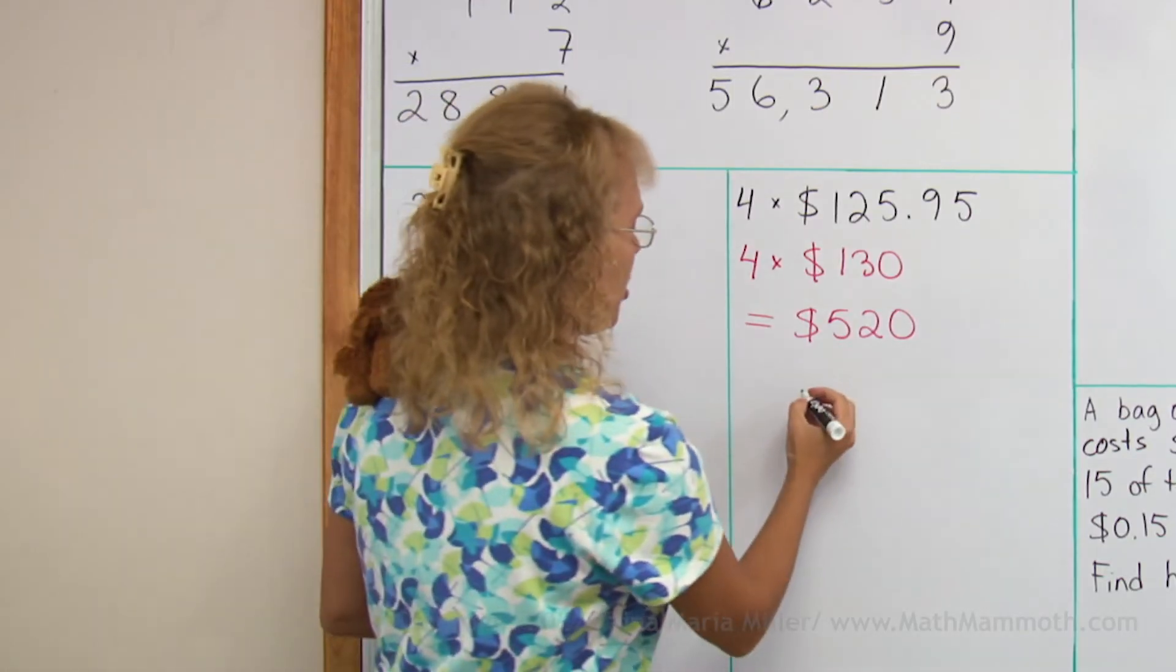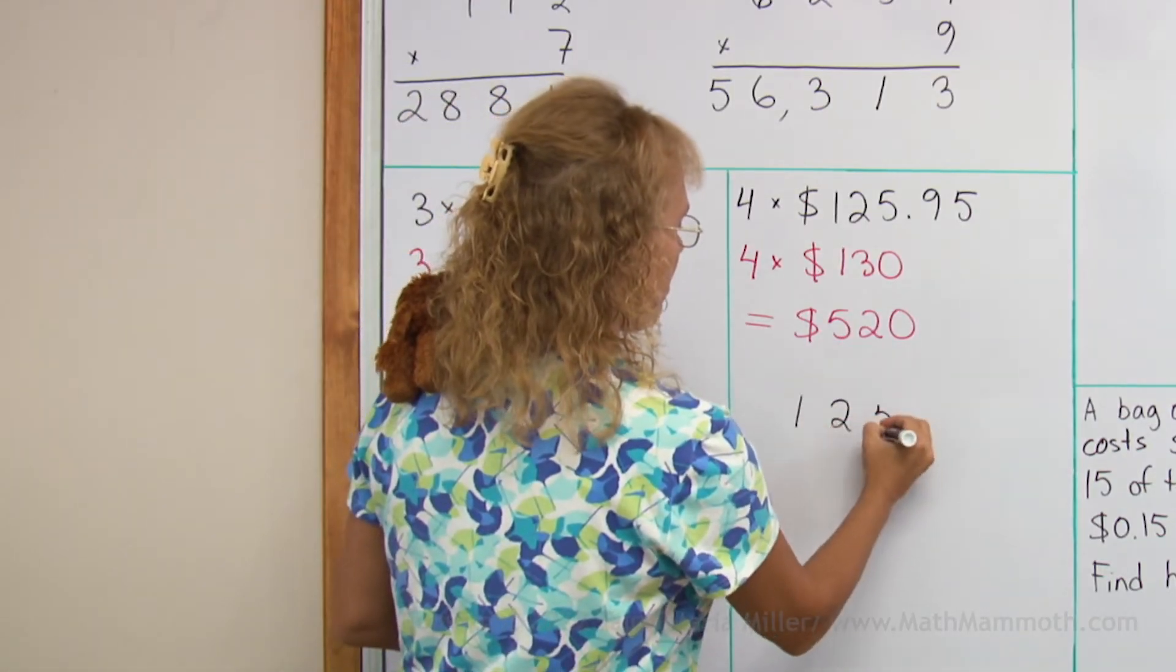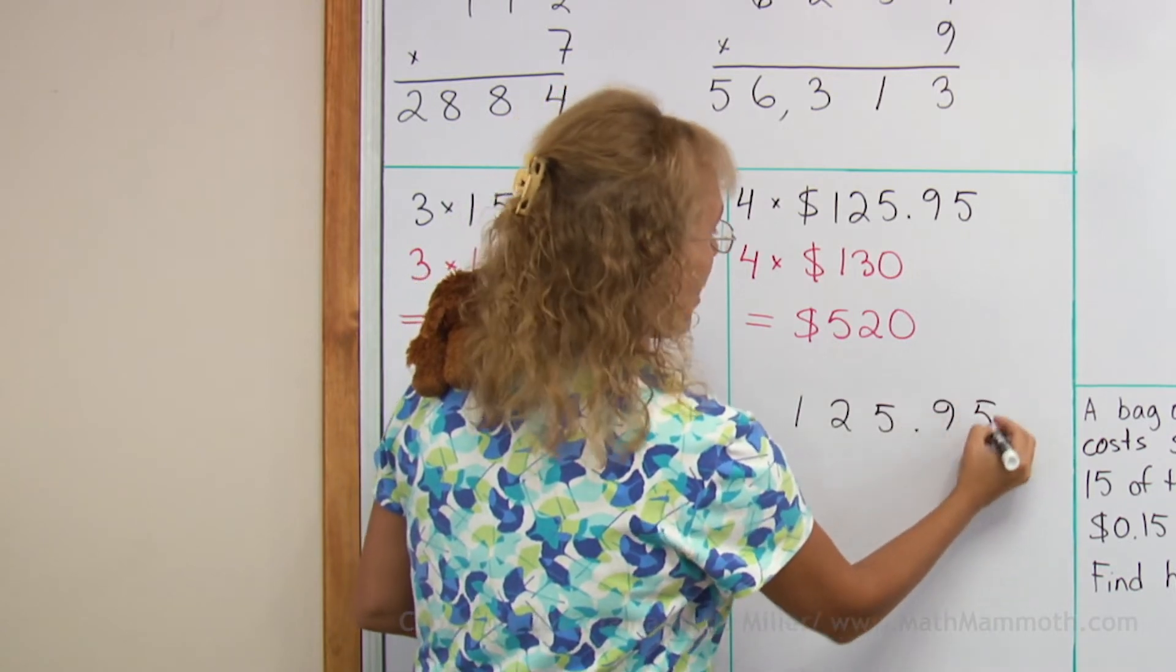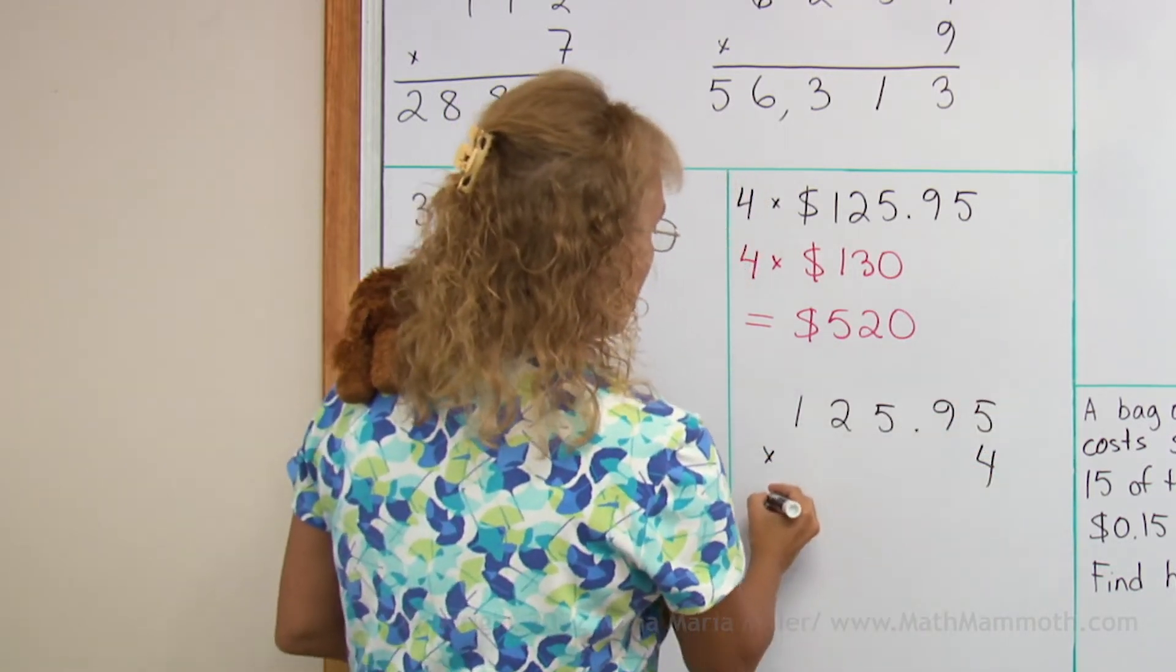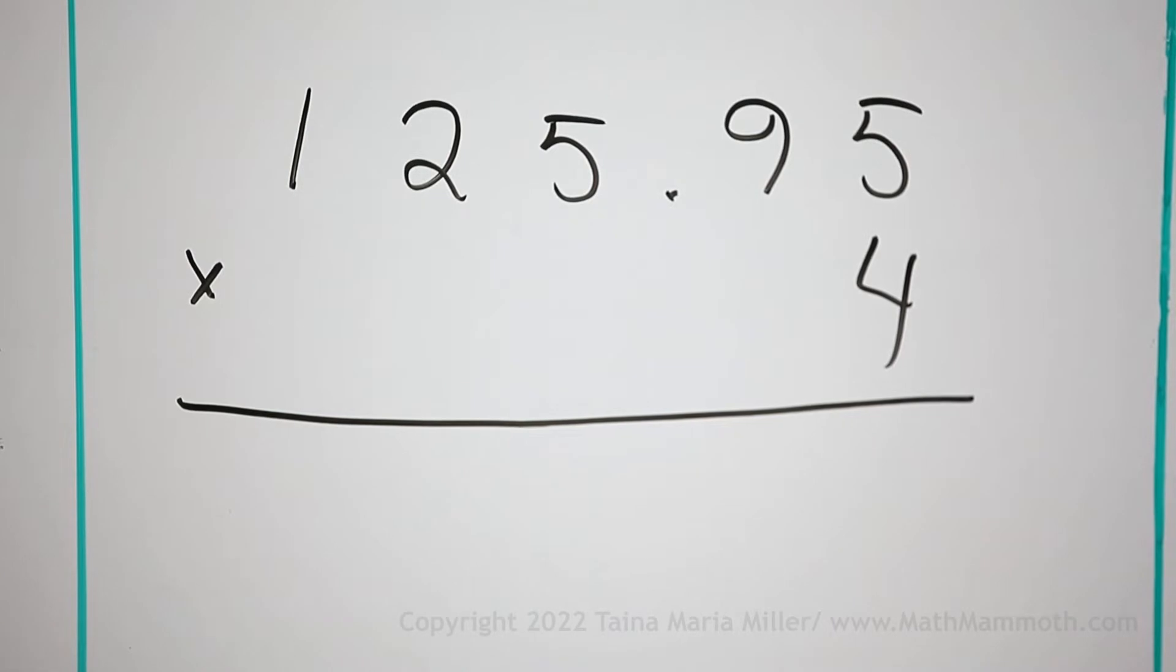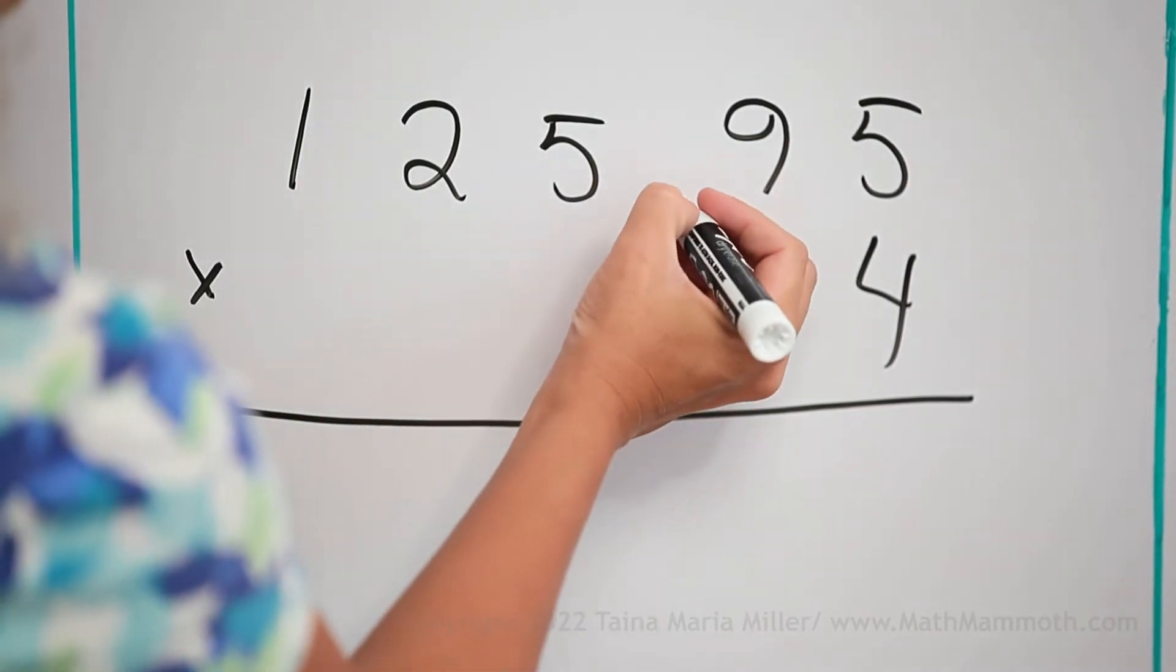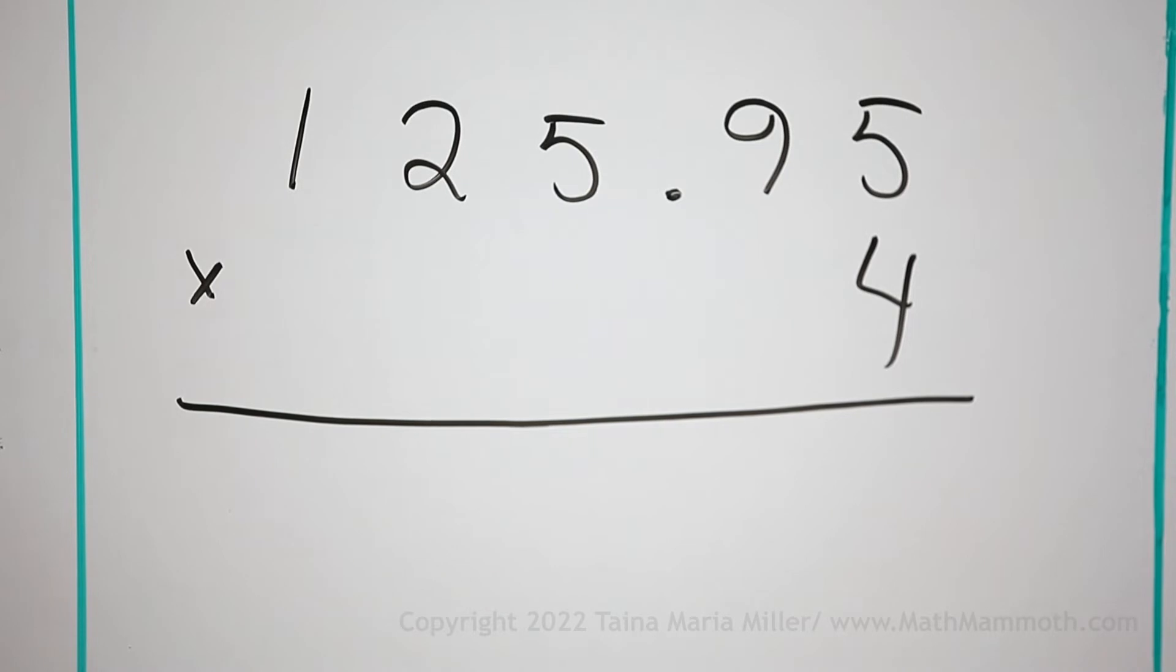And now, the multiplication. You remember how to multiply money amounts? It's very easy. Just multiply as if there was no decimal point. You just ignore this decimal point while you're multiplying. And then in the end, we will put the decimal point in the answer.